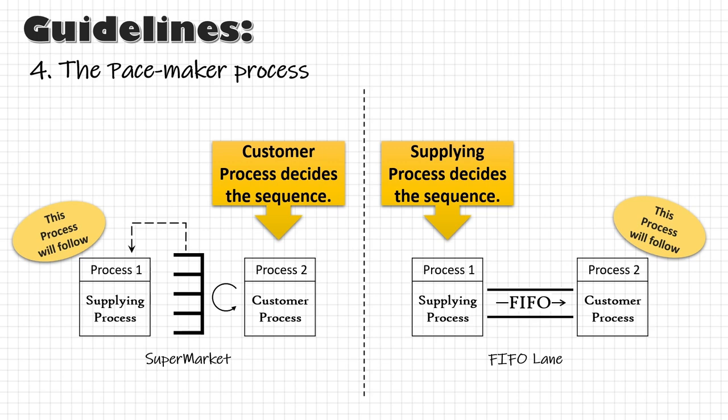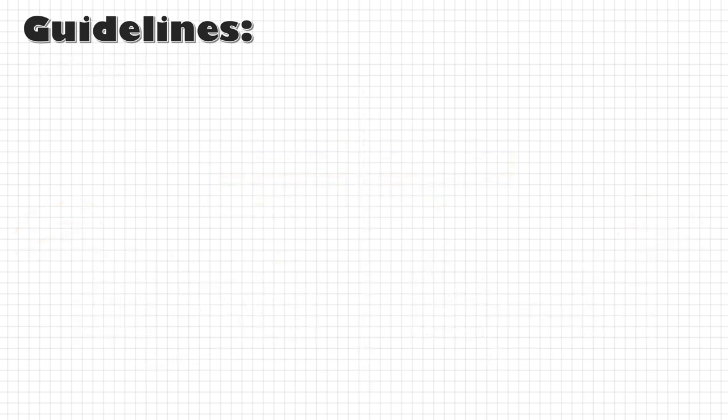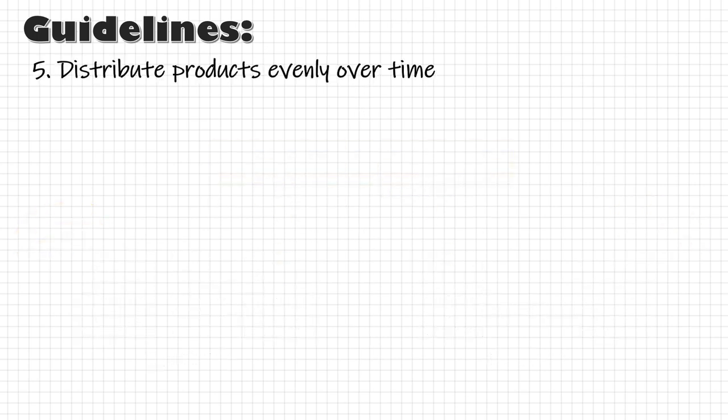Once we have achieved a continuous flow with production scheduling at only one process step — the pacemaker process — we can move to point number five, where we distribute the production of different products evenly over time at the pacemaker process, or what we can call leveling the production mix.